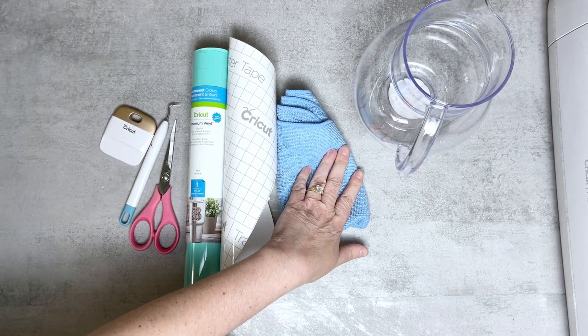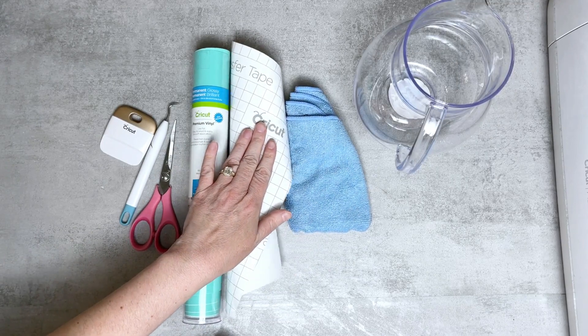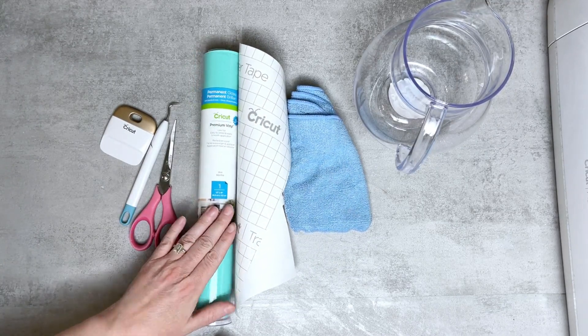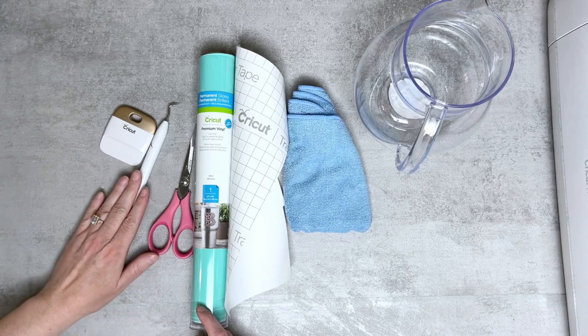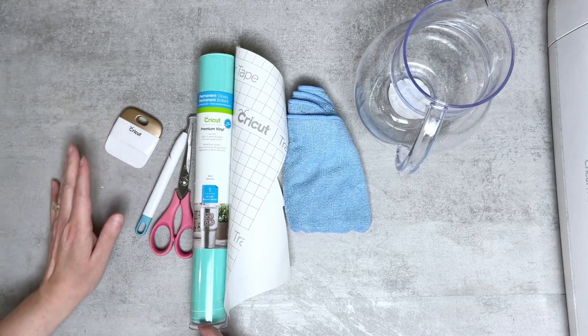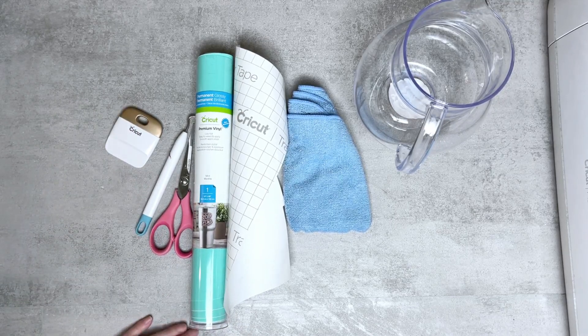I'm also using a microfiber rag, Cricut transfer tape, Cricut premium vinyl in the color mint, a pair of scissors, a weeding tool, and a scraper tool and we're going to go ahead and get this started.